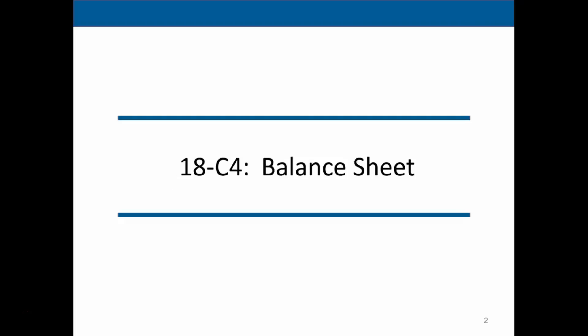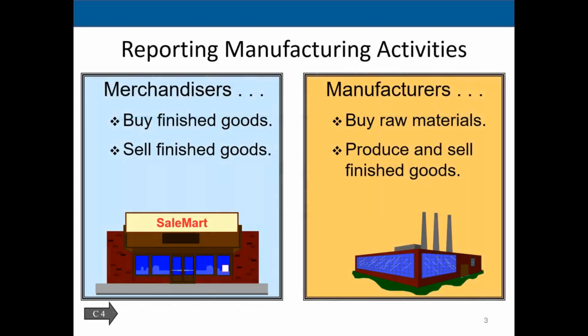In this lecture we will continue discussing Chapter 18. We're going to talk about the balance sheet in terms of the manufacturer's balance sheet — reporting manufacturing activities. We're going to compare the merchandising company to the manufacturer. We have the service company, then we have merchandisers who buy stuff and sell inventory, like Amazon, and then manufacturers which have inventory broken down into raw material, in-process material, and finished goods.